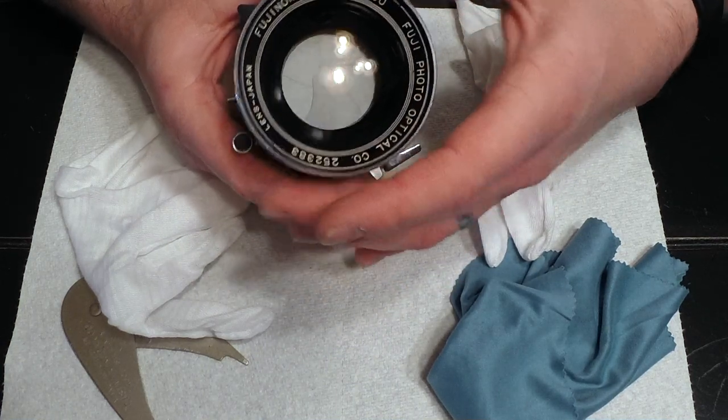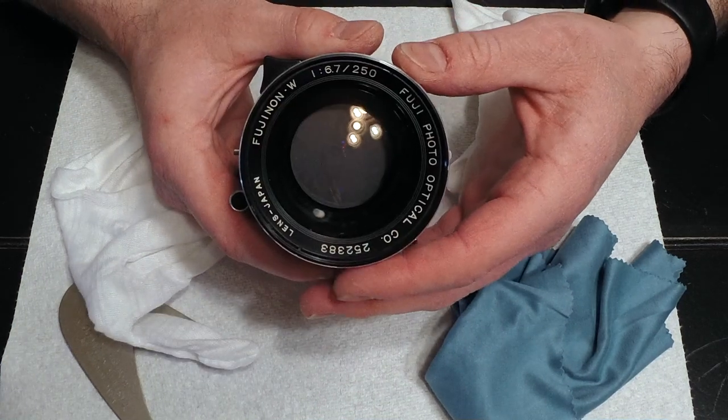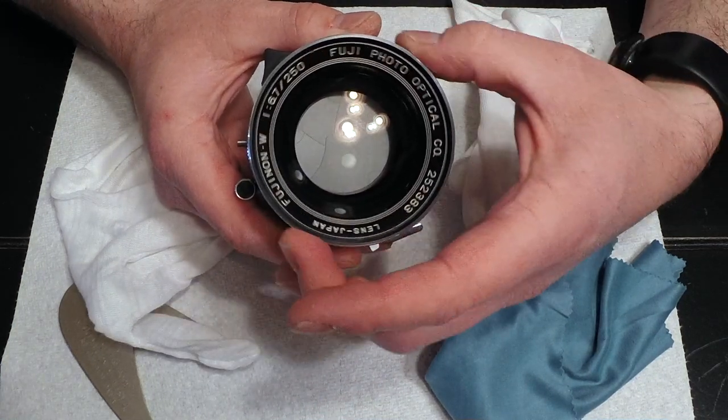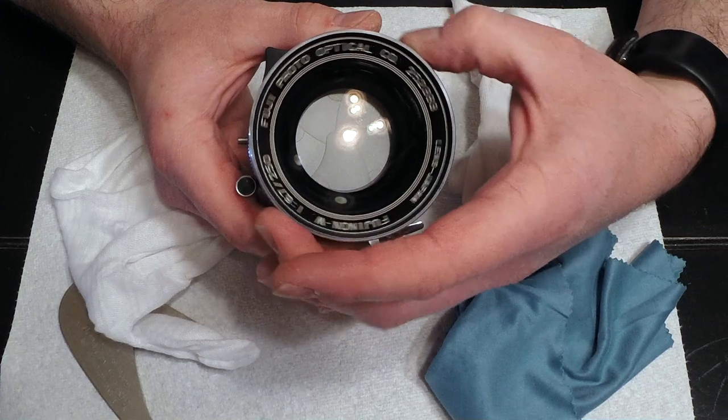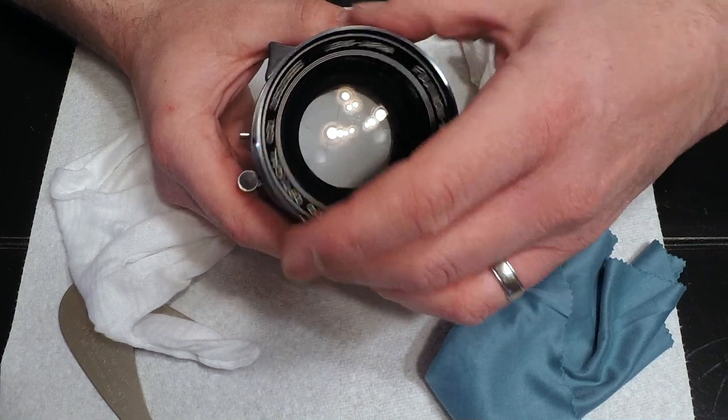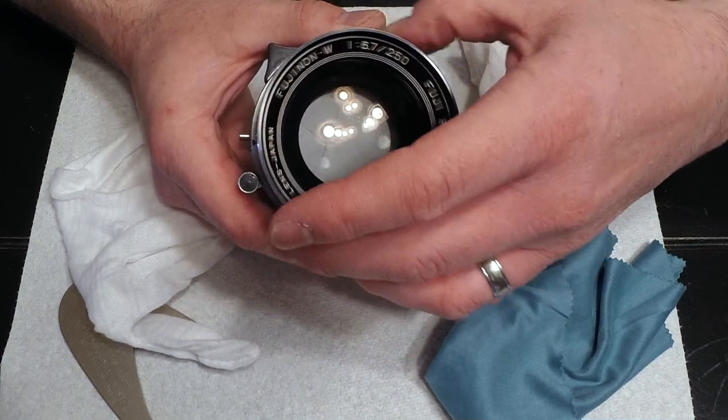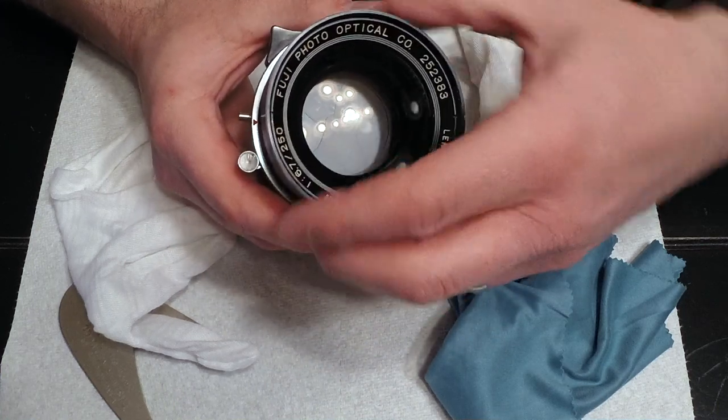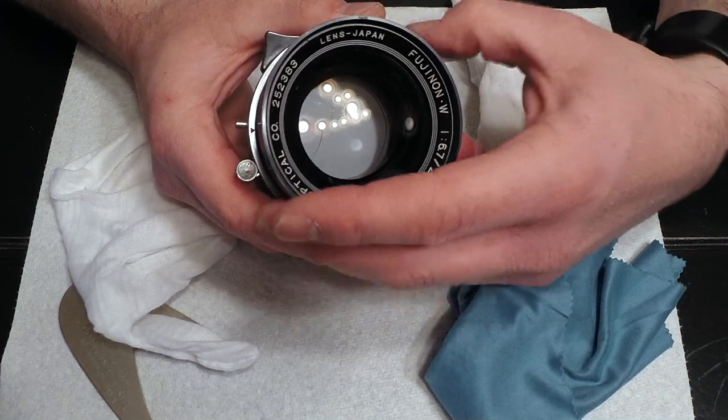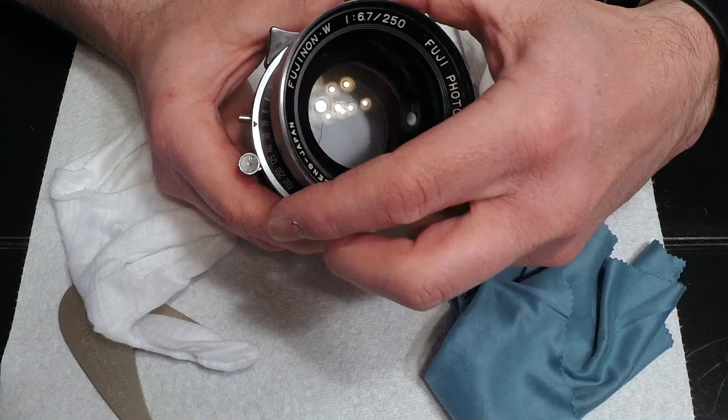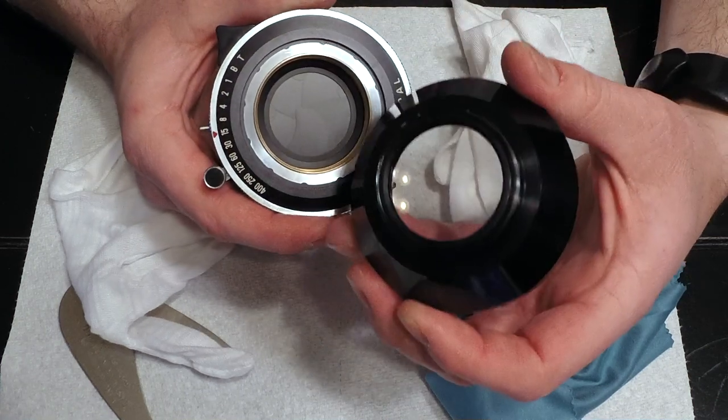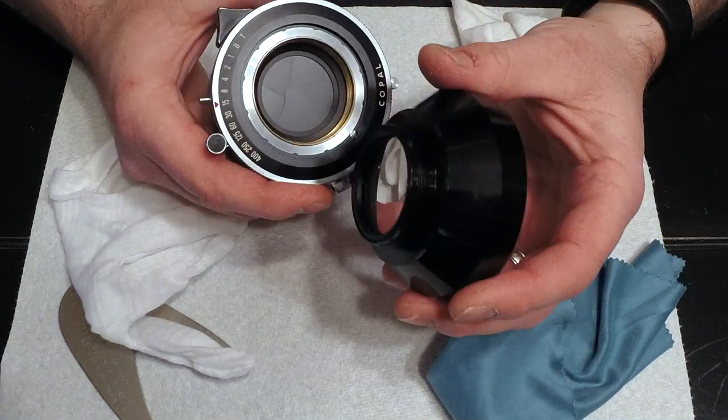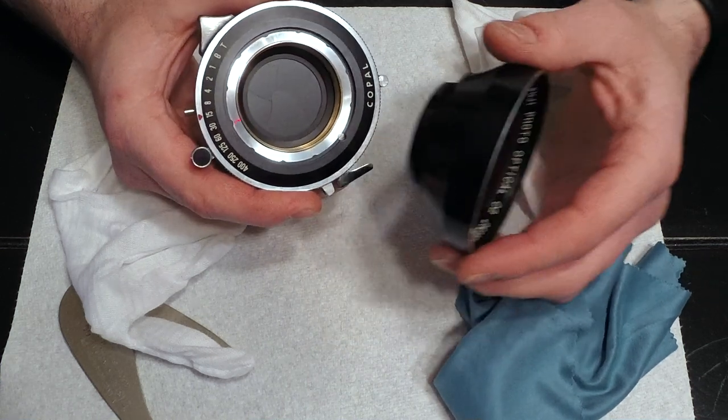The first thing that I will do is remove the elements from the shutter. When I do this, especially the first time, I want to make sure that I'm very careful in case there's any spacers in the lens, so that I make sure to keep the order and where those spacers are.